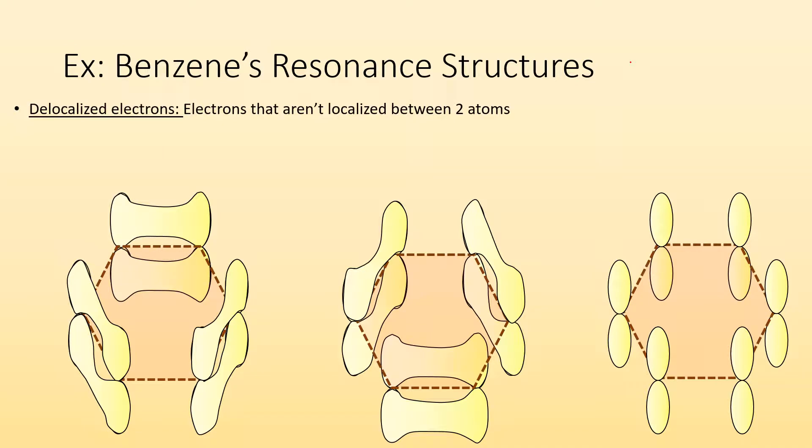Delocalized electrons, again, are electrons that aren't localized between two atoms. Instead, they move between multiple atoms, not just two, but more than two atoms. So in benzene, they move between all six carbons.